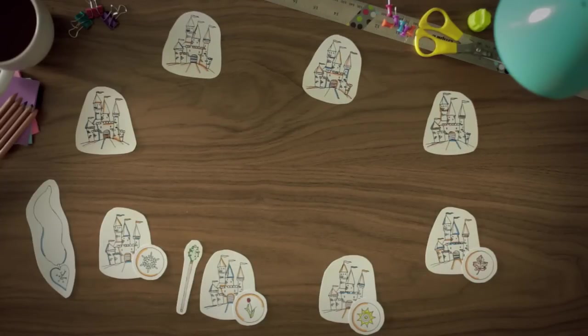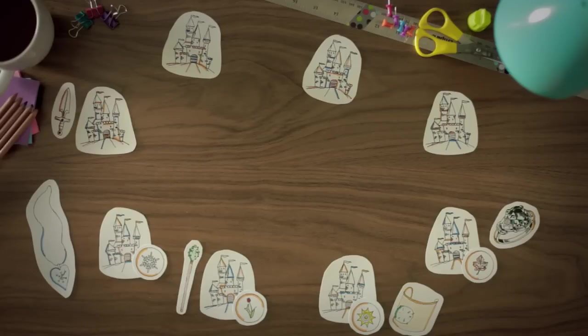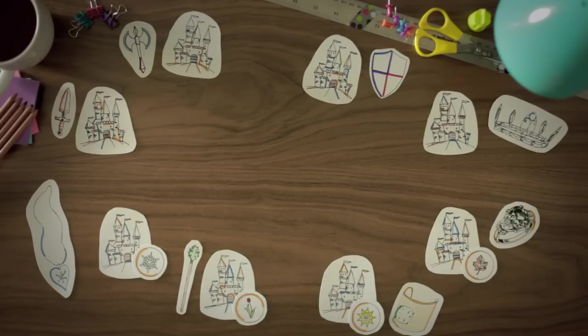Each kingdom possesses a conduit, a magical item that can only be wielded by the kingdom's ruler, and only affects that kingdom's citizens.